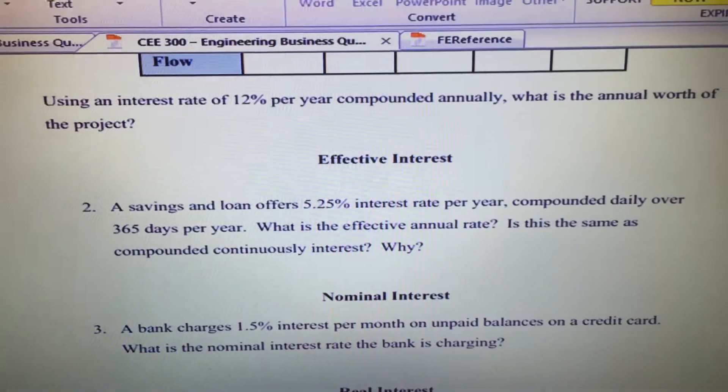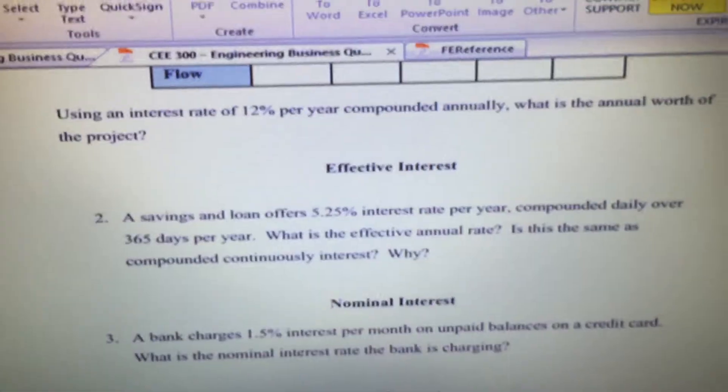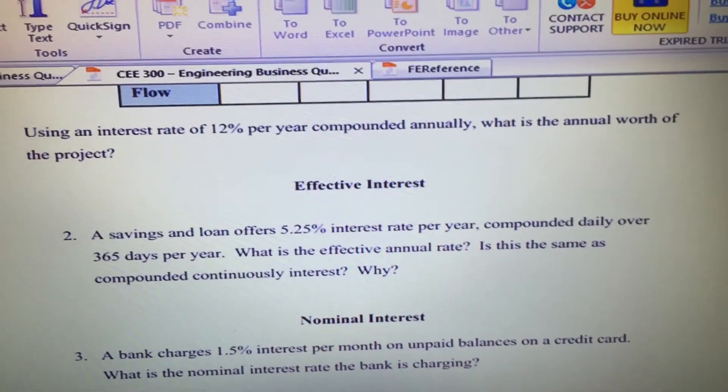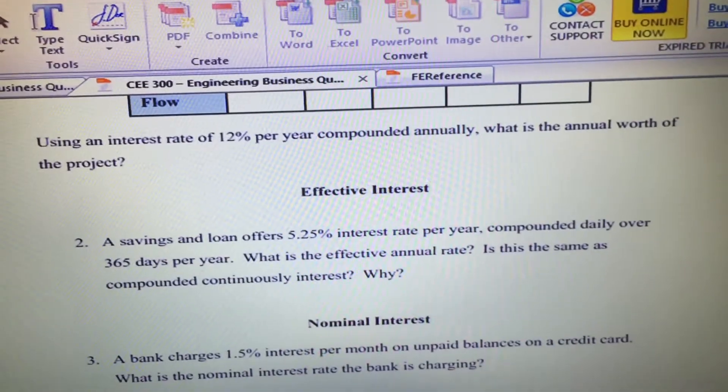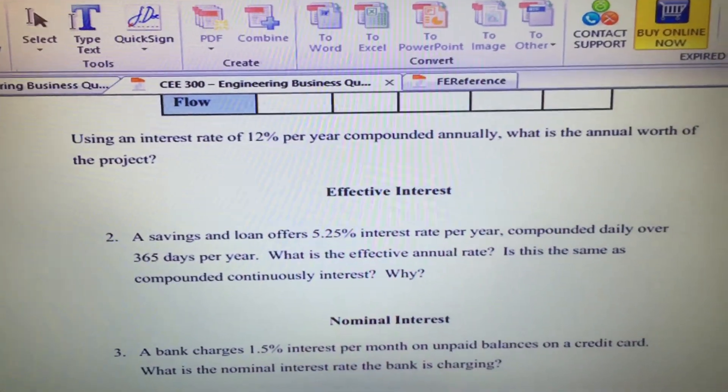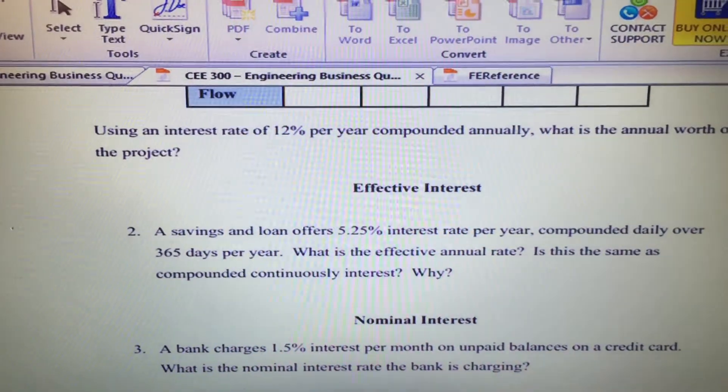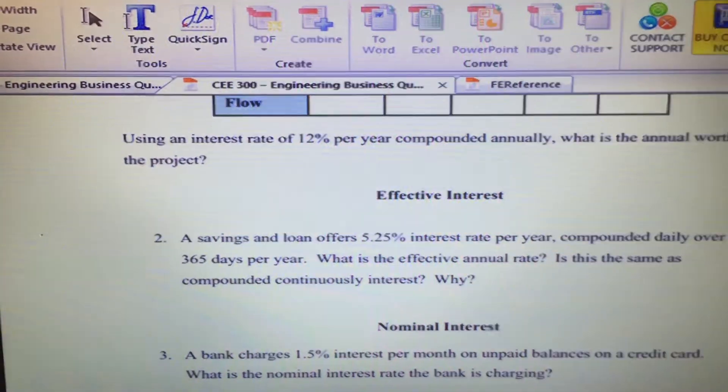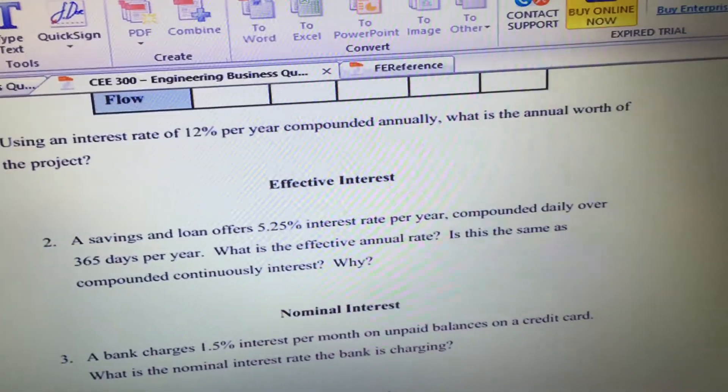A saving and loan offers 5.25% interest per year, compounded daily over 365 days per year. What is the effective annual rate? Is it the same as compounded continuous interest? Why? So these are two questions put in one.